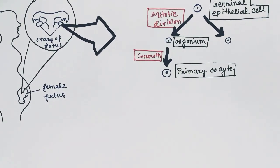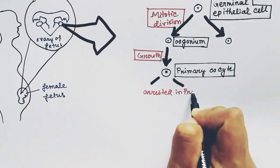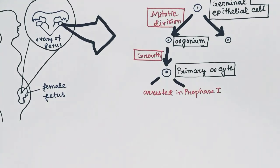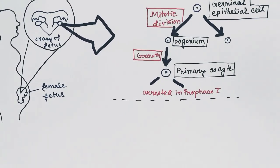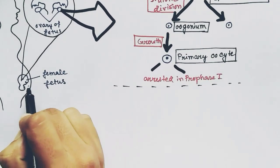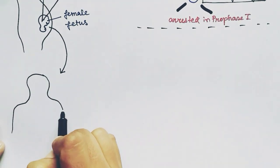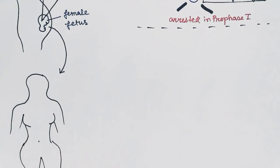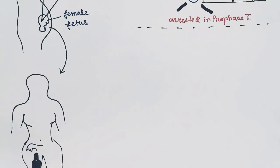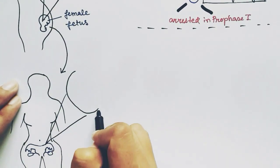Now when the primary oocyte goes through meiosis one, it gets arrested in prophase one of meiotic cell division one, and this stops until the female fetus is born and becomes a mature woman and comes to puberty.